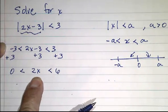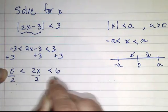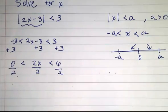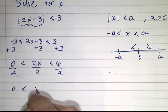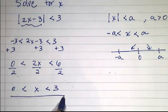And our last step will be to divide each piece by 2. So that way we stay balanced, and we get 0 is less than x is less than 3. So this is our solution set to this original inequality.